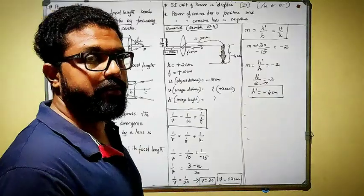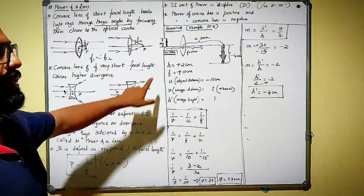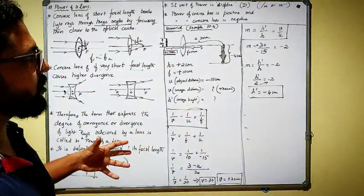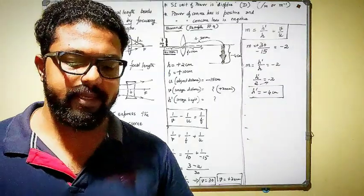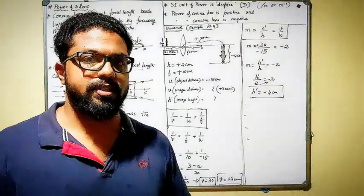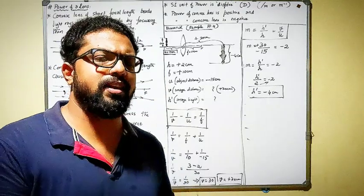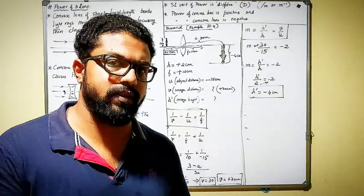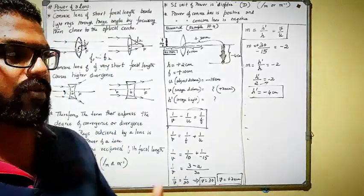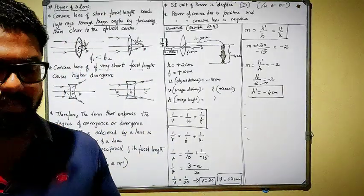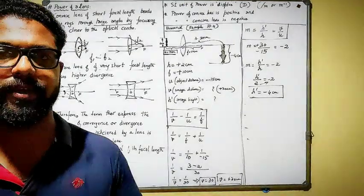Please make sure you understood whatever was taught in today's class — pause the video, understand it, note it down, and put answers in your own sentences rather than just copying from the board. Finish this chapter and we can move on to the next chapter, Human Eye and the Colorful World, which is closely related to this chapter. Please complete all the exercise questions and I will give you a worksheet for this chapter.